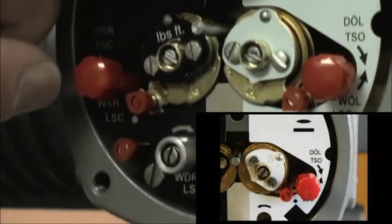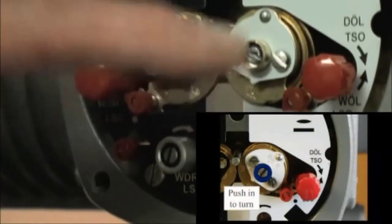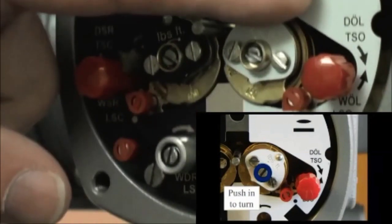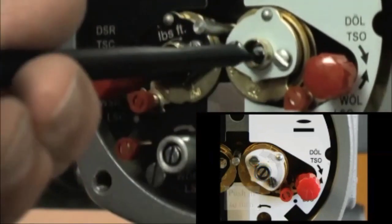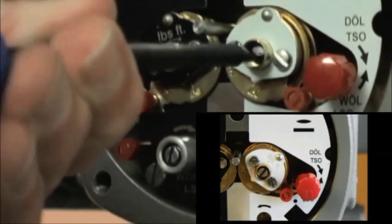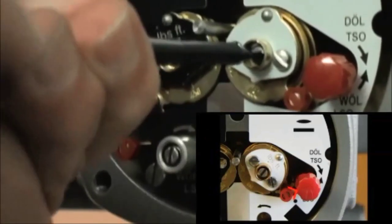We're going to set our open limit switch using the center screw in the middle of our open torque dial on the white or open side of my actuator. I'm going to push in and turn in the direction of the arrow, which is counterclockwise for open, and I'm going to bring my pointer just around.